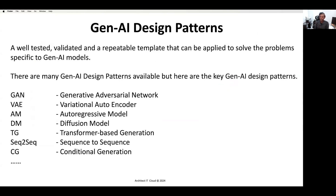Here is the list of Generative AI Design Patterns available: Generative Adversarial Network, Variational Autoencoder, Autoregressive Model, Diffusion Model, Transformer-based Generation, Sequence-to-Sequence, and Conditional Generation — and the list goes on. We are going to pick one particular design pattern here: the first one, Generative Adversarial Network, and see how it works. If you are a data scientist or data engineer, you must know how GAN works and how you can use this design pattern to solve Generative AI-specific problems in your organization.